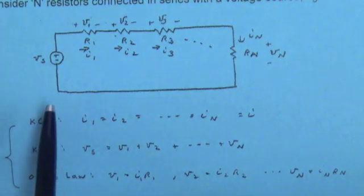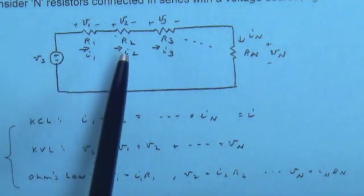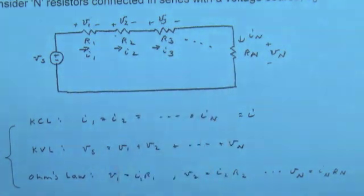By Kirchhoff's voltage law, minus Vs plus V1 plus V2 plus plus Vn has to be equal to zero. And by element constraints, in this case Ohm's law, V1 is equal to I1 R1, Vn is equal to In Rn, and so on. So that's bringing KCL, KVL, and element constraints to bear on this issue.